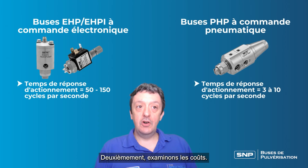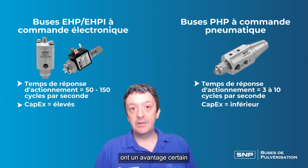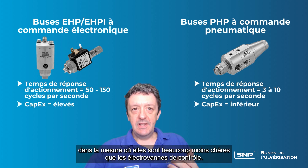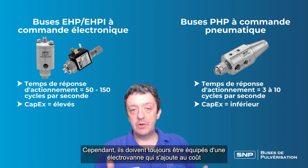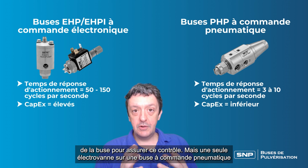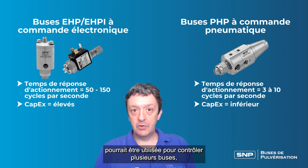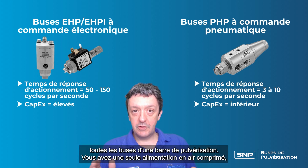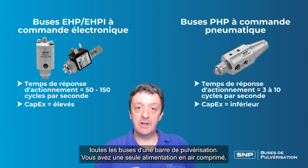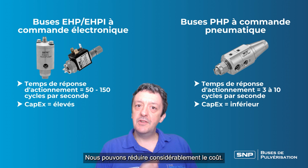Secondly, let's look at cost. The PHP air actuated nozzles have a distinctive advantage — they are a lot cheaper than the solenoid-controlled valves. However, they still need a solenoid valve added to the cost of the nozzle, but a single solenoid valve on air actuated nozzles can be used to control multiple nozzles. So the cost of those solenoids can be spread out over all the nozzles on a spray bay, with one actuating air supply controlled by a single solenoid, bringing the cost down considerably.